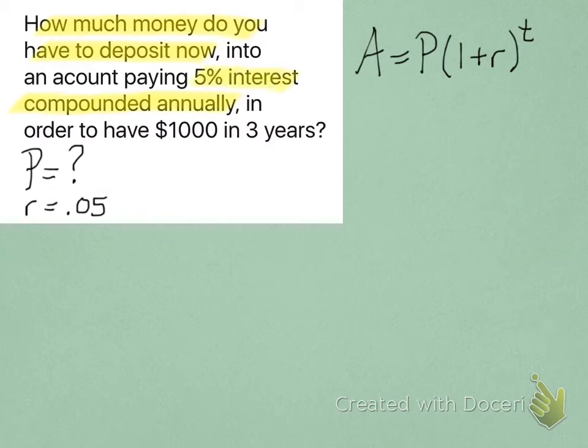5% interest, so the R is 0.05. And we want to have $1,000 in 3 years. So, the T is going to be 3. And the final amount is actually $1,000, because that's what you want to have in 3 years.